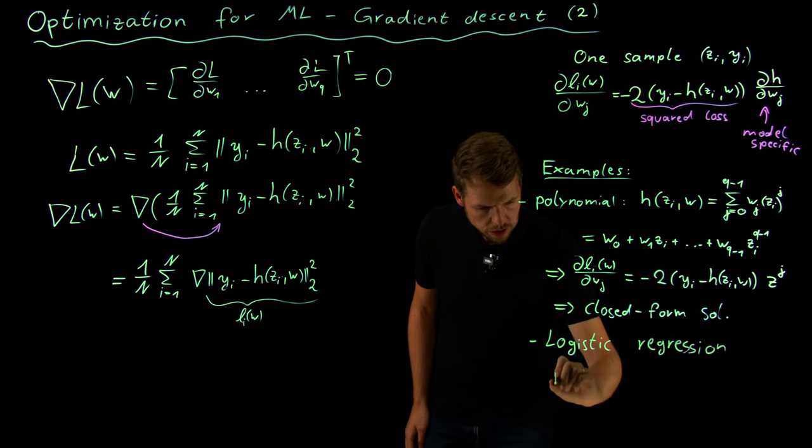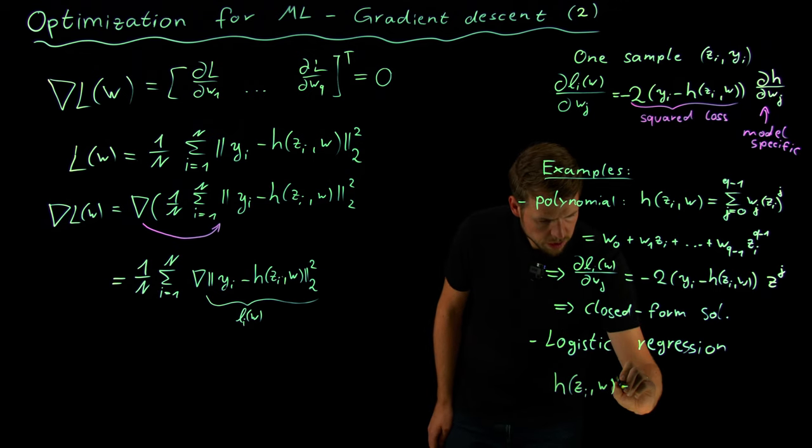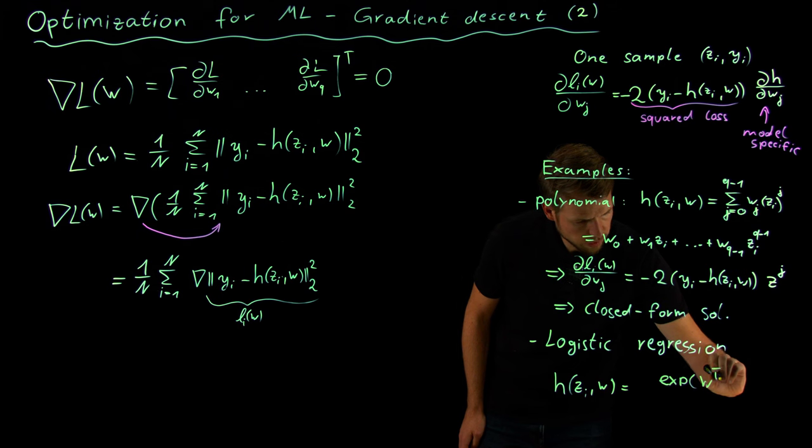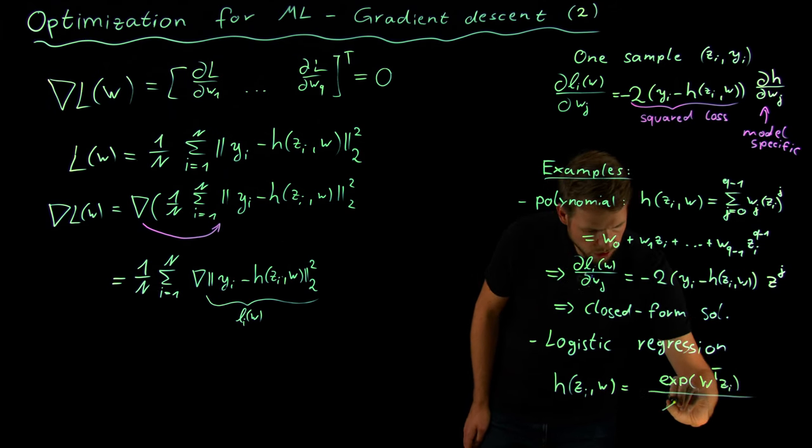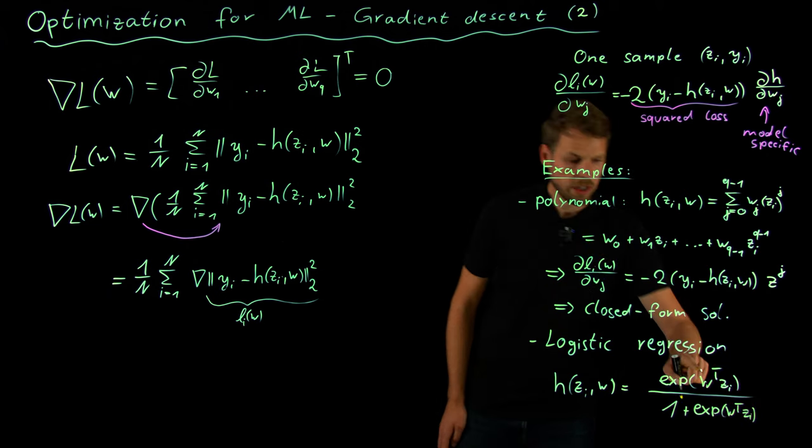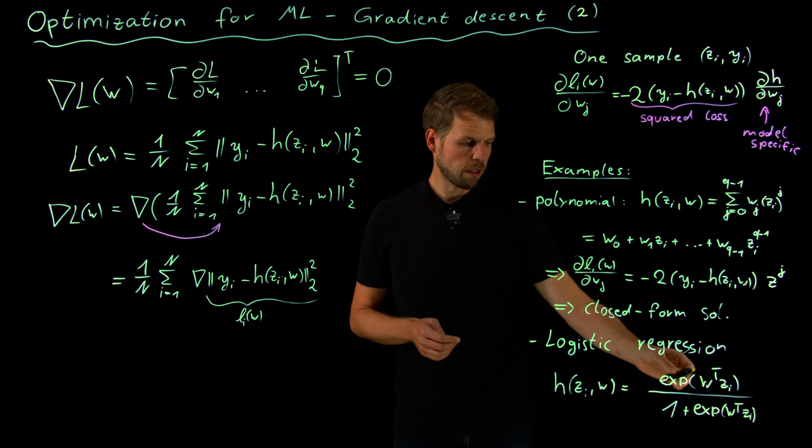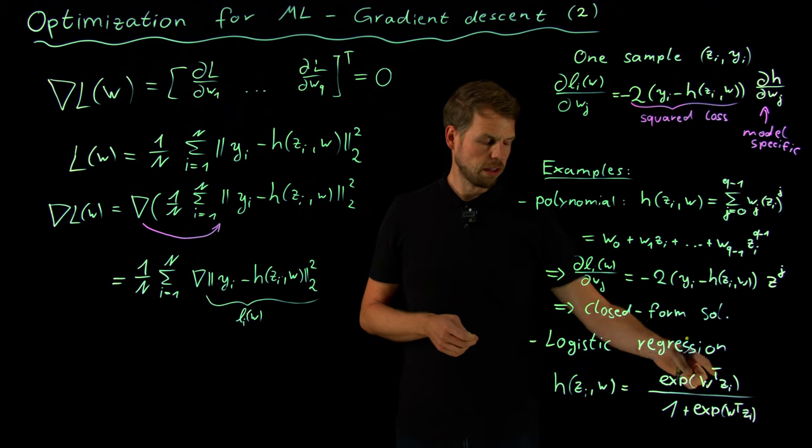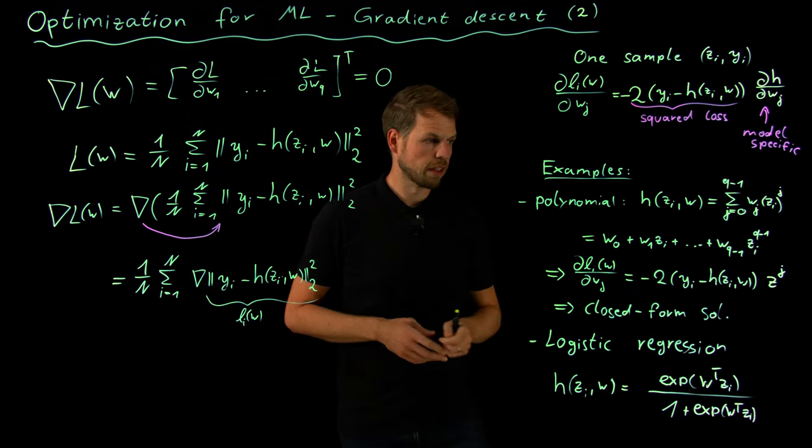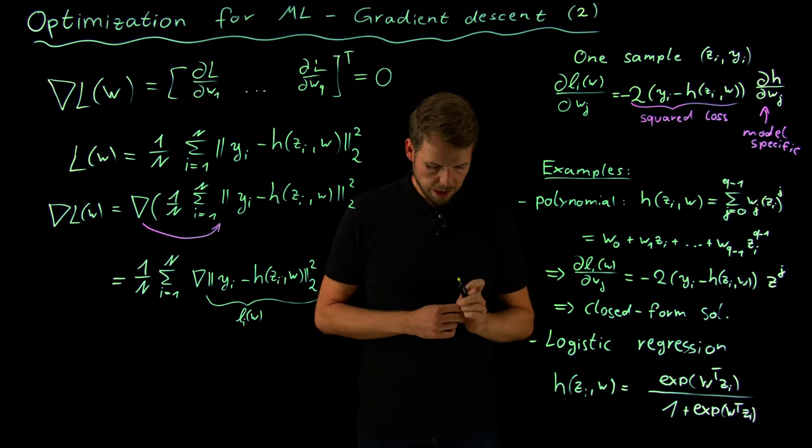There we have our h of z_i and w is what we call the logistic function, which is the exponential function of w transpose z_i divided by 1 plus the same expression, exponential function of w transpose z_i. By the way, I'm using w transpose here. Earlier we have seen w times z_i. This is really a bit of a difference in terms of how you define weights. Here I'm interpreting weights as a column vector as well as individual feature vectors as column vectors. In order to take the inner product you need the transpose.